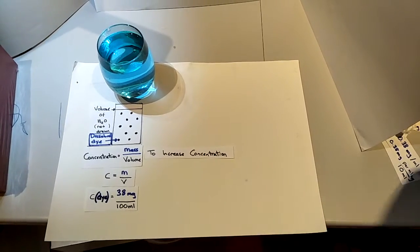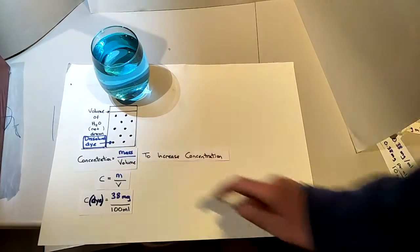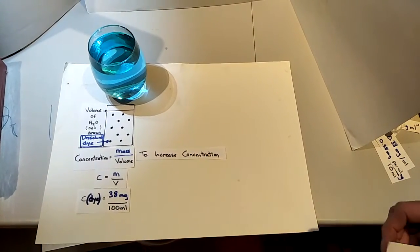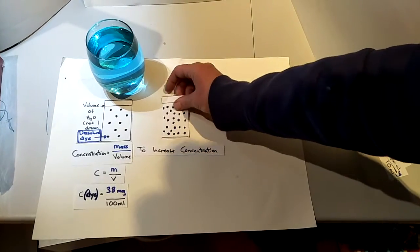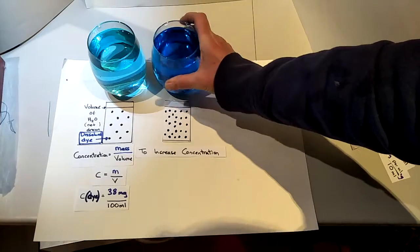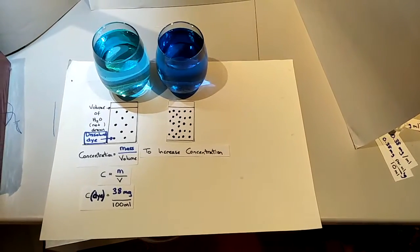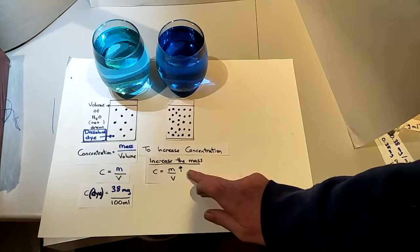Okay, so this is looking at what we can do to increase the concentration. There's two things that we can change. First one is looking at keeping the volume the same but increasing the mass. So if we put more particles in, we've got the same volume with more particles. You've increased the concentration.